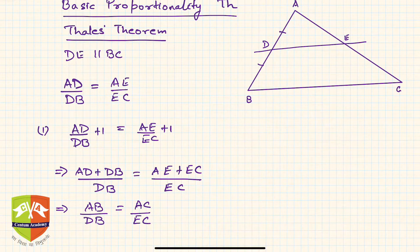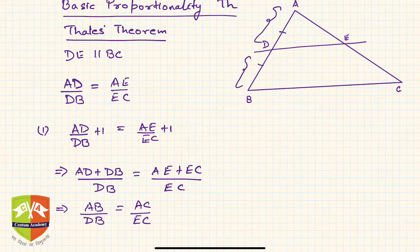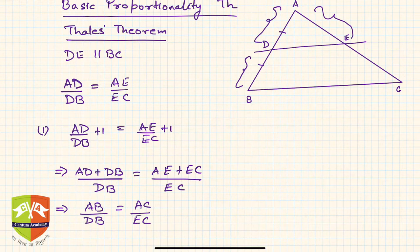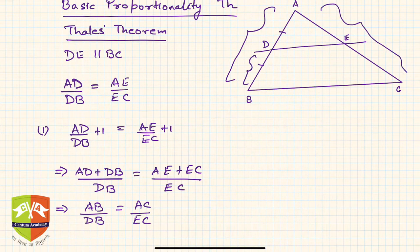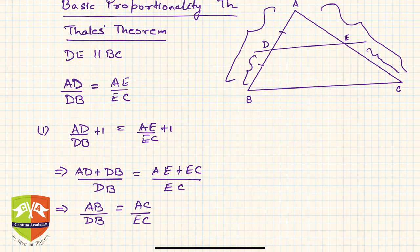So the first corollary is: the full side divided by one part equals the full side on the other side divided by the corresponding part. From BPT we had AD/DB = AE/EC, and the first corollary gives us AB/DB = AC/EC. This results from a rule in proportions called componendo.